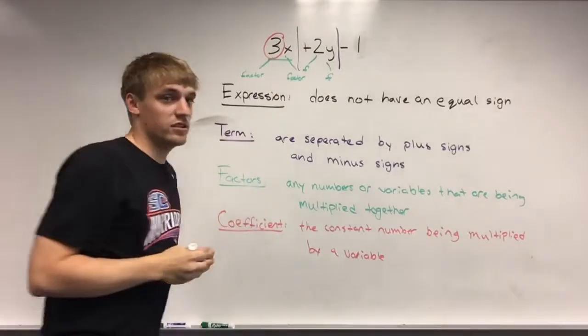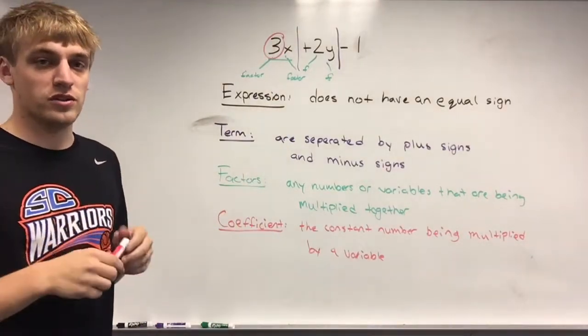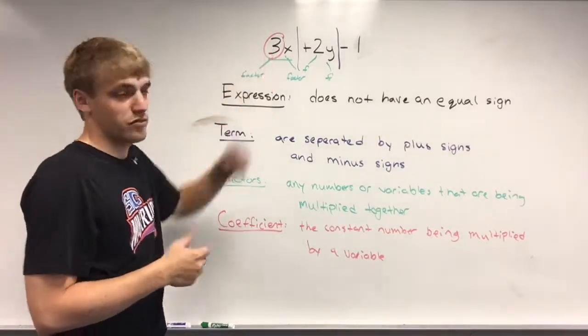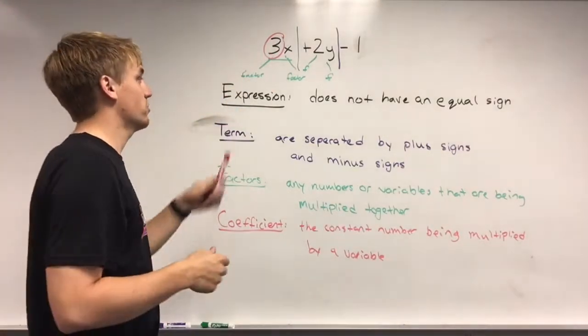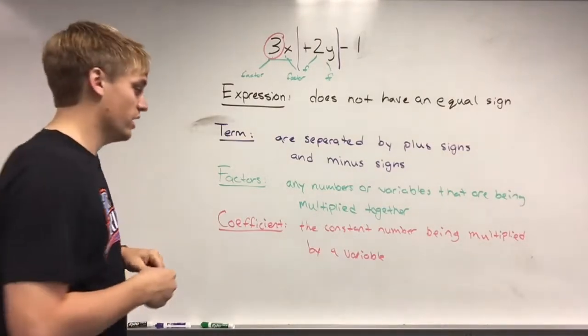Because 3 is the constant number. 3 can't change but x can. x could be any number it wants to be, but 3 is always going to stay 3 in this case. So 3 is the coefficient of x.